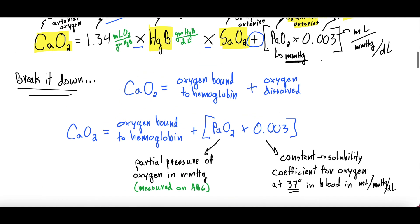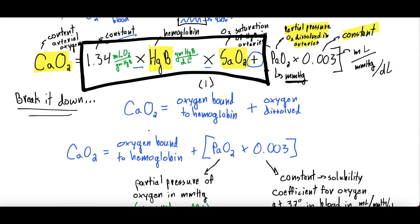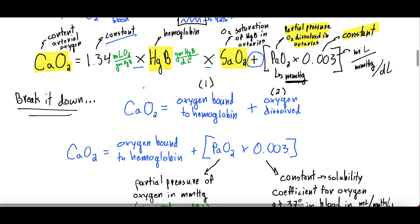Simplifying the equation: CaO2, the oxygen content in arterial blood, equals the amount of oxygen bound to hemoglobin — which is 1.34 × Hgb × SAO2 — plus the amount of oxygen dissolved in the blood — which is 0.003 × PaO2. Conceptually, that is all it is: looking at the artery and asking how much total oxygen exists between that connected to hemoglobin and that dissolved freely in the blood.